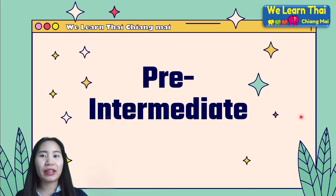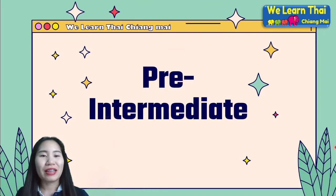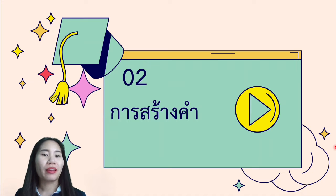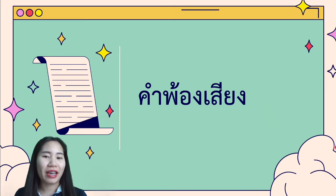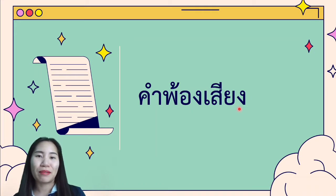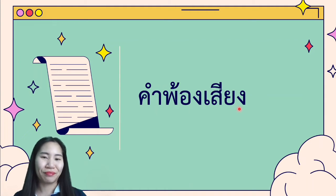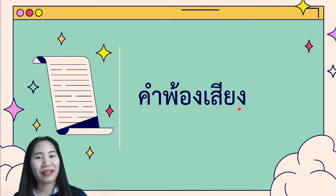Welcome back to WeLearnThai Chiang Mai School. It is Pre-Intermediate Book 3 with me, Kranim. So today we will continue with Chapter 2, and the topic of today is คำพ้องเสียง. Do you know what คำพ้องเสียง is? คำพ้องเสียง is the homophone. It means words that have the same sound but are different in writing and meaning. Are you ready? Now let's get started.